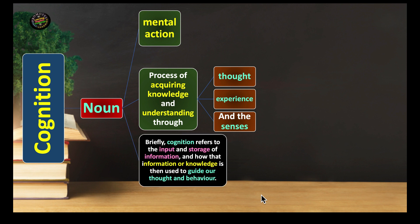Briefly, cognition refers to the input and storage of information, and how that information or knowledge is then used to guide our thought and behavior. Once you acquire knowledge, let that knowledge guide you to improve your way of thinking and behavior.